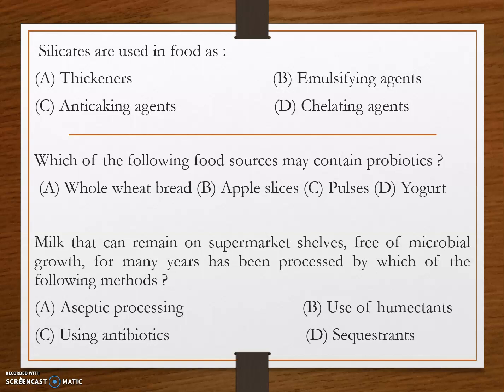Anti-caking agents are additives added to powdered or granulated materials to avoid lump formation or caking. Some examples of anti-caking agents include silicates — mainly potassium silicate and sodium silicate.